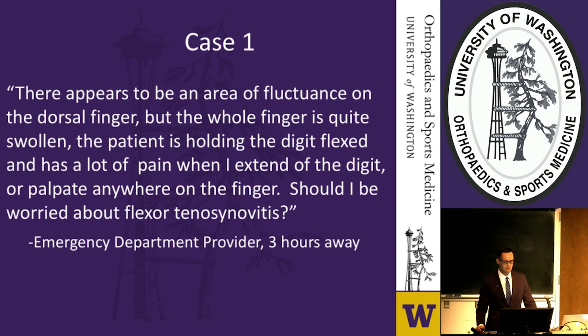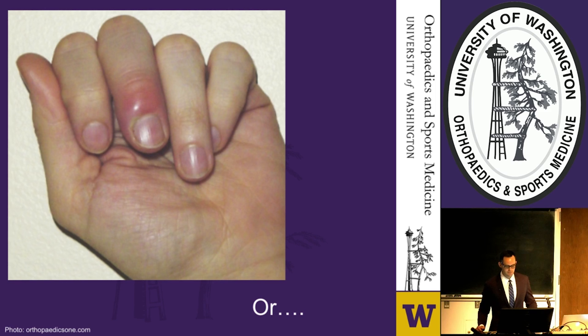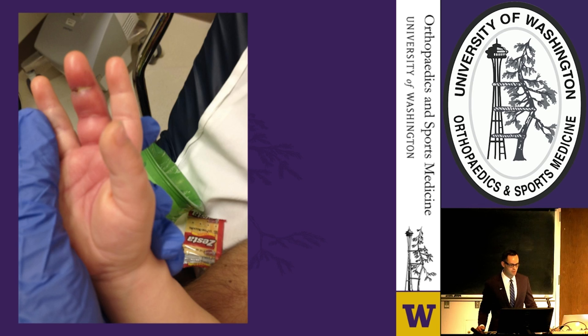To illustrate the difficulty of diagnosis: imagine a call from an emergency department provider three hours away at a different hospital. There appears to be an area of fluctuance on the dorsal finger but the whole finger is quite swollen. The patient is holding the digit flexed and has a lot of pain with extension or palpation anywhere on the finger. Without being able to examine it yourself, this could represent a small dorsal abscess, a dorsal hand cellulitis, or a full-blown flexor tenosynovitis.